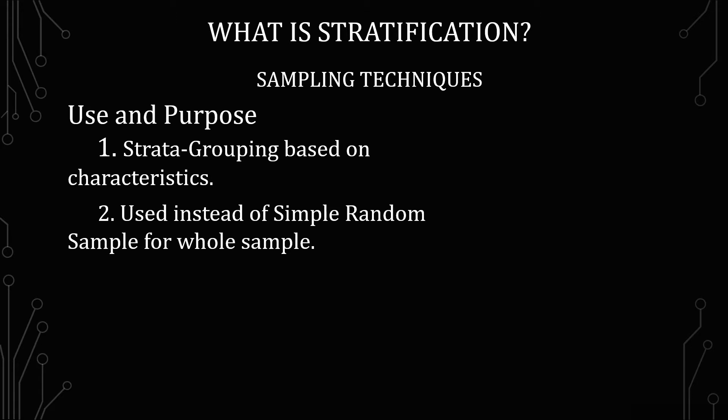The next purpose is to use stratification instead of simple random sampling on the whole sample. With simple random sampling, and understanding the central limit theorem, results will generally be proportional to whatever you're studying. The problem comes when there are confounding variables or methodological bias you can't avoid — like doing a cell phone survey when most older people don't have cell phones, or an internet survey when not everyone in the population has a computer.